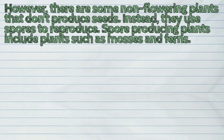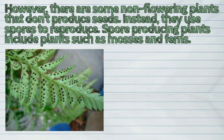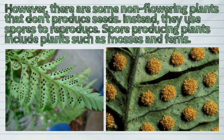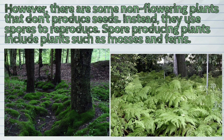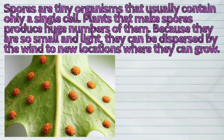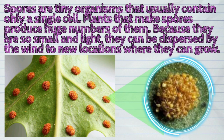However, there are some non-flowering plants that don't produce seeds. Instead, they use spores to reproduce. Spore-producing plants include plants such as mosses and ferns. Spores are tiny organisms that usually contain only a single cell. Plants that make spores produce huge numbers of them. Because they are so small and light, they can be dispersed by the wind to new locations where they can grow.